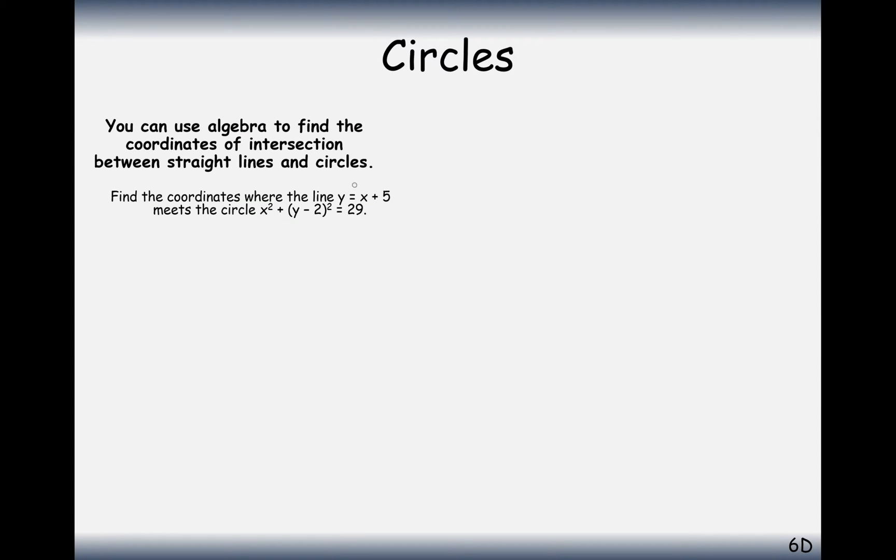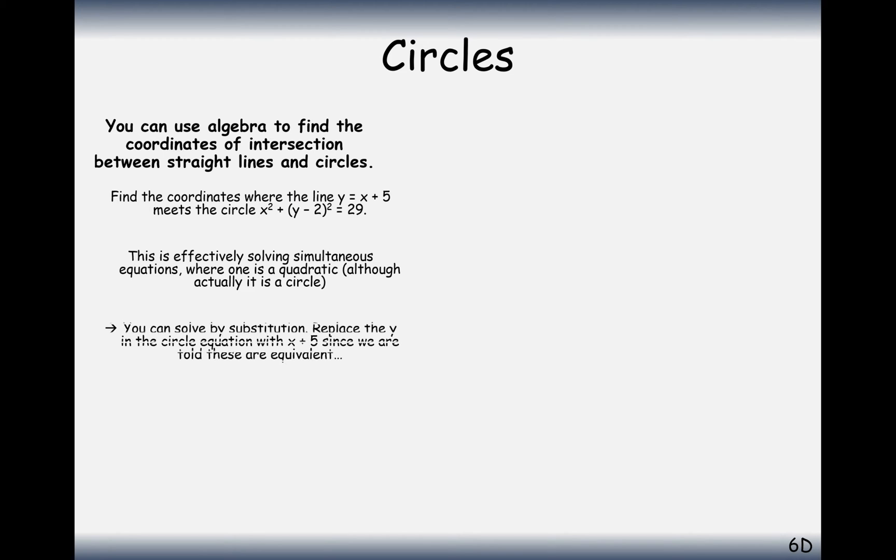What we have here is the equation of a line, y equals x plus 5, and the equation of a circle, x squared plus y minus 2 squared equals 29. We've seen this previously, effectively in a previous chapter, solving these two as simultaneous equations, one quadratic, one linear, so it's going to be by a method of substitution here.